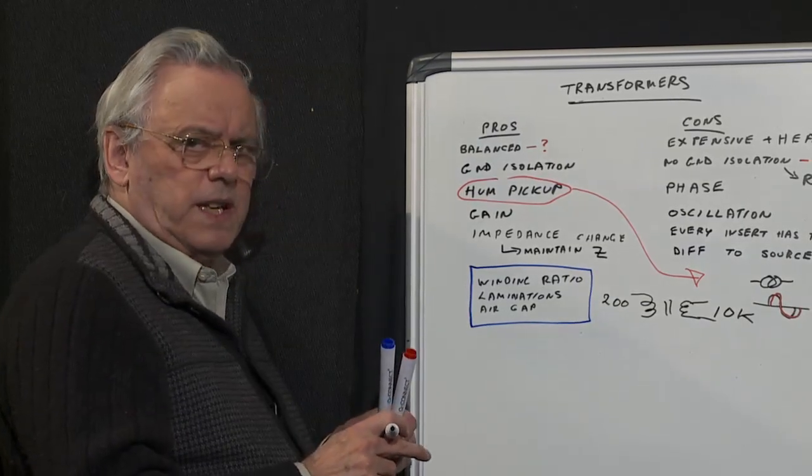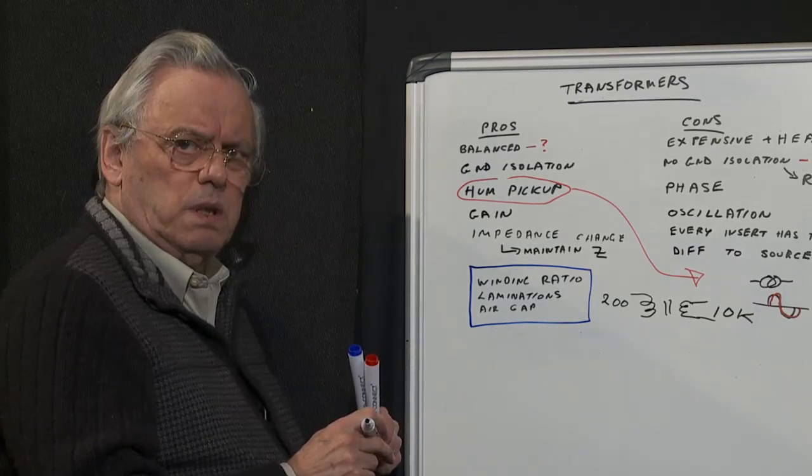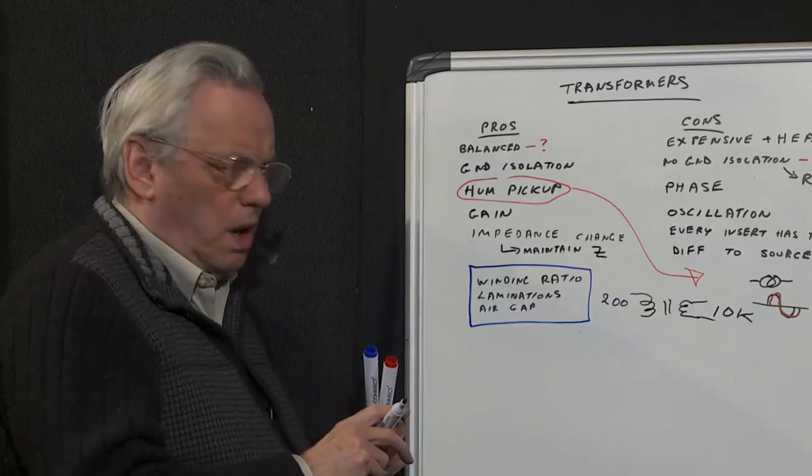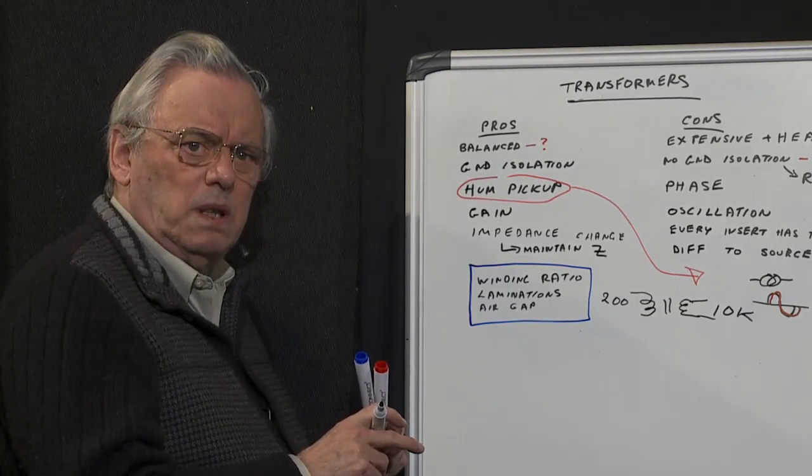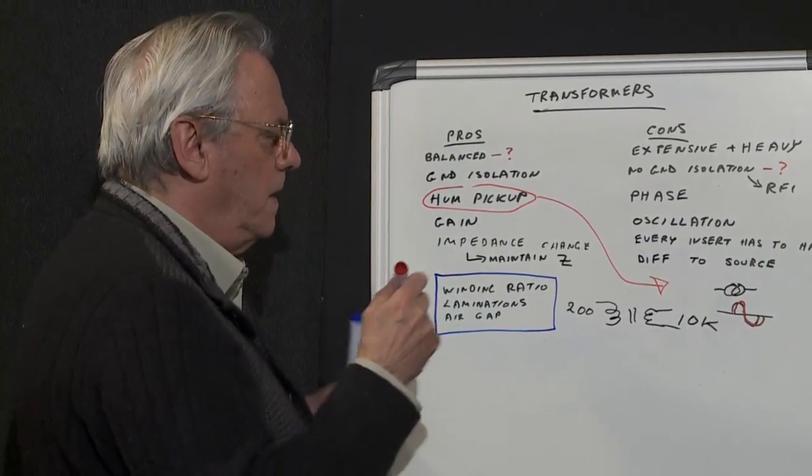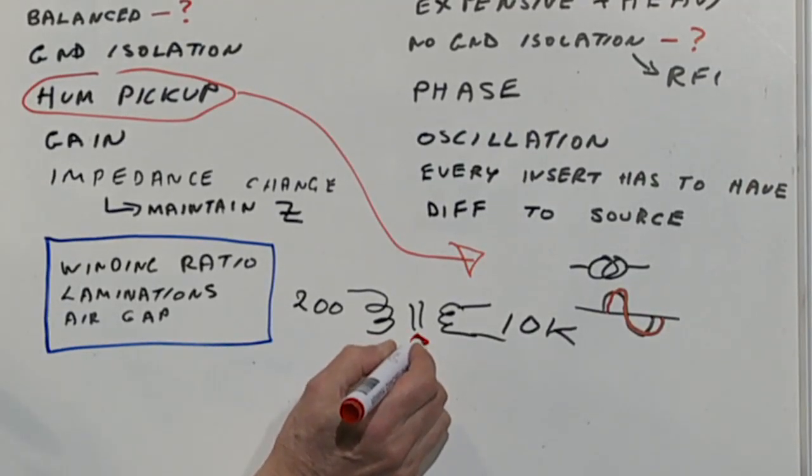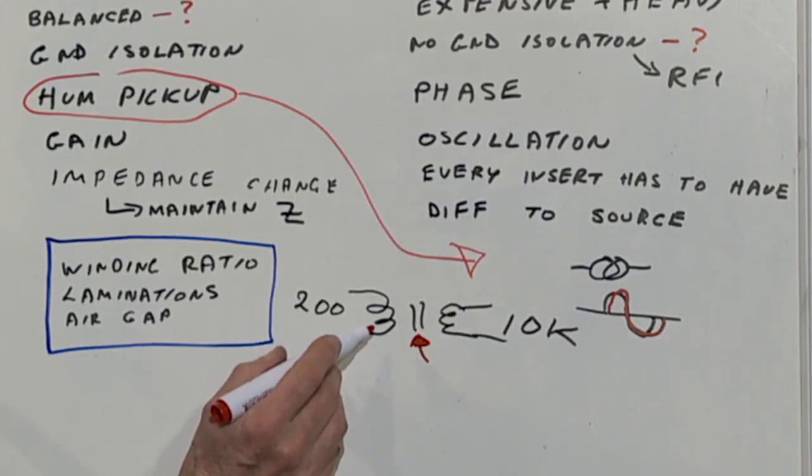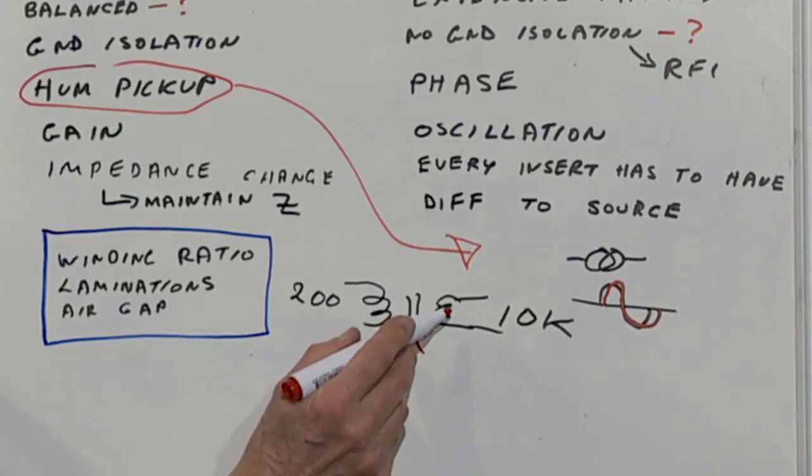The laminations—we have to be very careful with laminations because of what's called saturation. The core of an audio transformer is generally mu metal. Now mu metal saturates, that means that if the metal laminations saturate, they will no longer accurately transform your signal from the primary to the secondary.